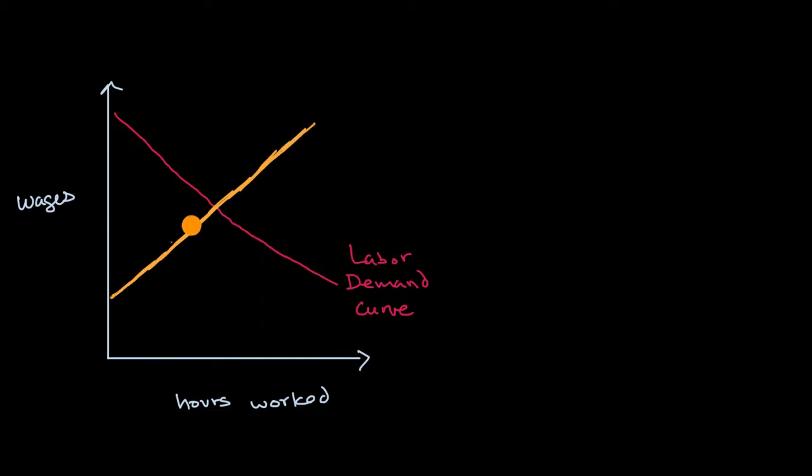And so they might collectively work more and more hours. And so as wages go up, generally speaking, hours worked goes up. So this is a fairly classic looking labor supply curve. And this dynamic that I just talked about, where people are trying to trade off whether they work or whether they do other things, this is typically referred to as the labor-leisure tradeoff.